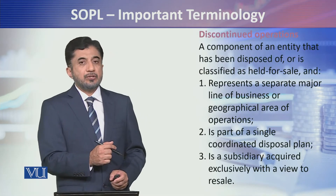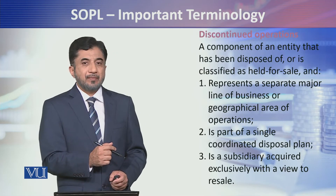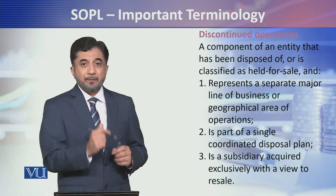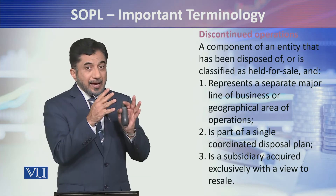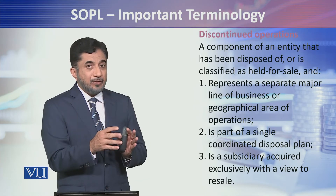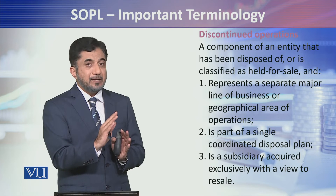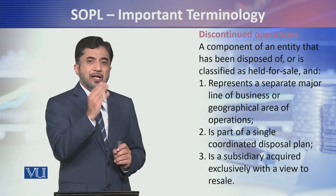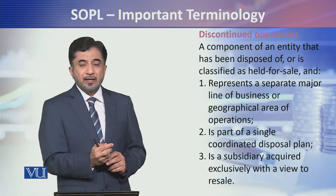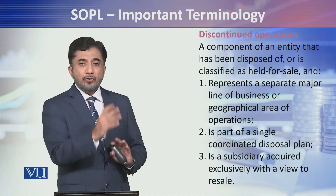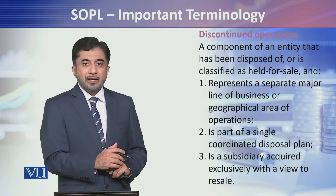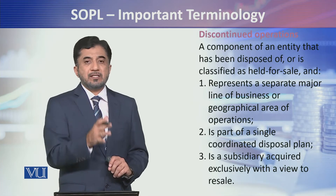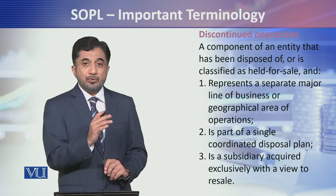Next है इसमें discontinued operation। Profit or loss account बनाते हुए हमने इस बात का खयाल रखना होता है कि is there any operation that we have disposed of during the reporting period? For example, मैं online business की बात करता हूँ — we have like 50 outlets जहां पर physically चीज़ें sales हो रहे हैं, और हमने online business की भी एक segment शुरू किया।